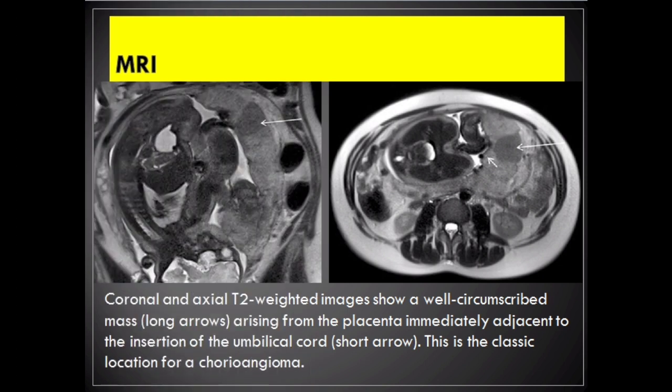Coronal and axial T2-weighted images show a well-circumscribed mass (long arrows) arising from the placenta immediately adjacent to the insertion of the umbilical cord (short arrow). This is the classic location for a chorioangioma.